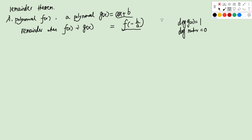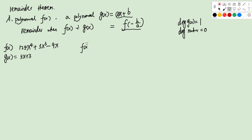Let's look at an example. We have f(x) = 125x⁴ + 5x³ - 9x and g(x) = 5x + 3. We want to find the remainder when f(x) is divided by g(x).